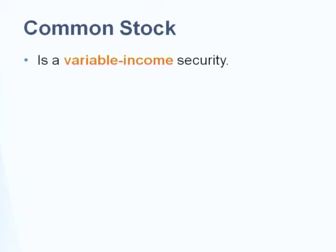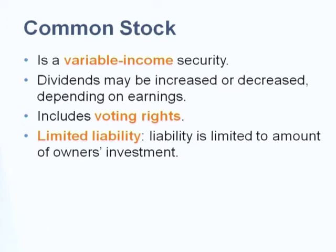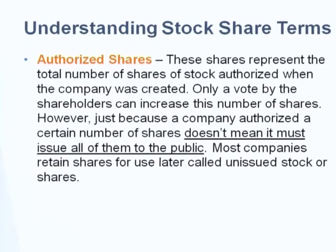Common stock is variable income - it's not fixed, unlike bonds and preferred stock. It depends on performance or management decision, and mostly it depends on earnings or net income. It includes voting rights; the more shares you buy, the more voting power you have. Limited liability is the maximum money you are responsible for once you buy common stocks. Priority is lower than debt in terms of claim on EBIT.